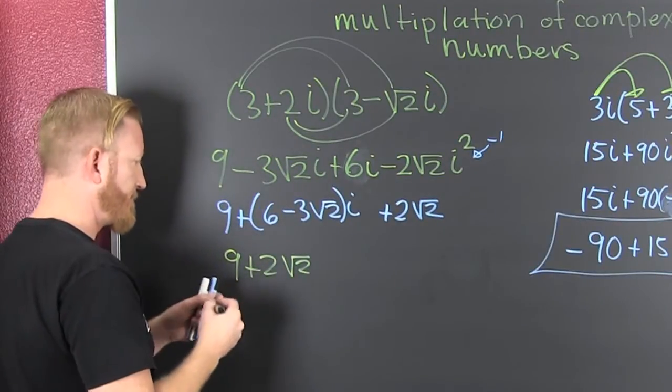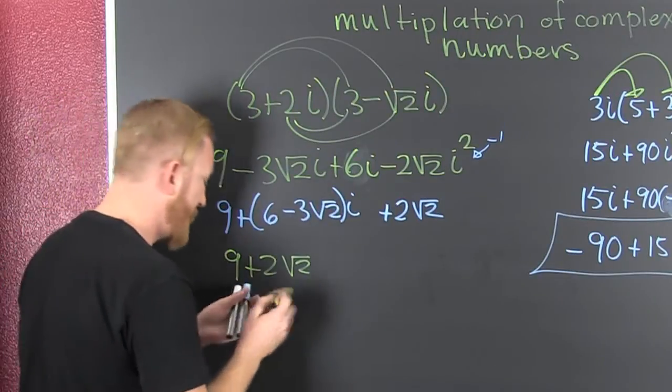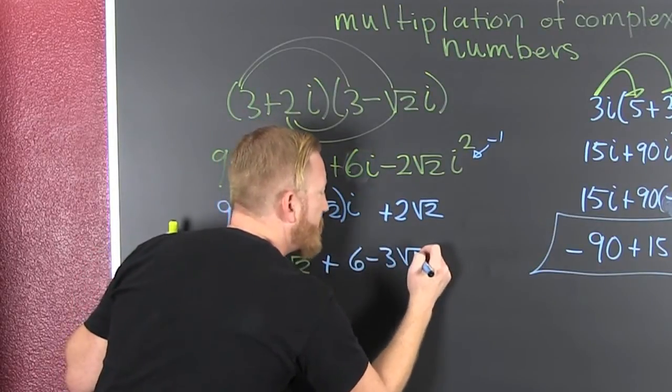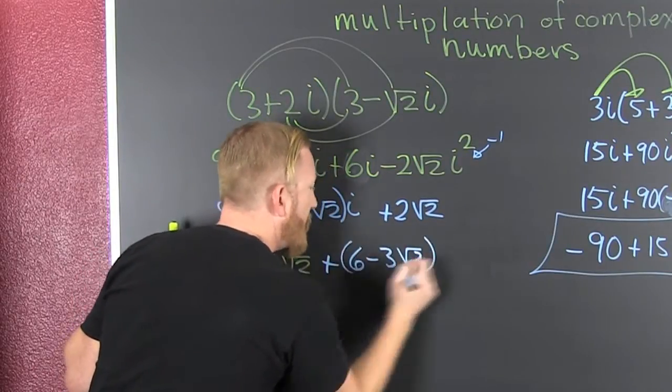Trill. It's true and real. And then I'm going to add to it the imaginary part. That's six minus three root two i.